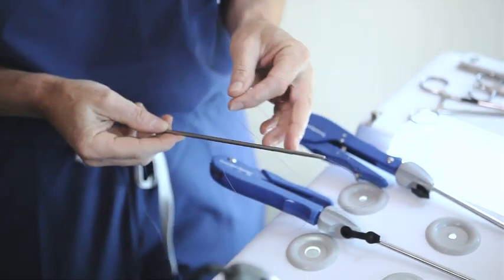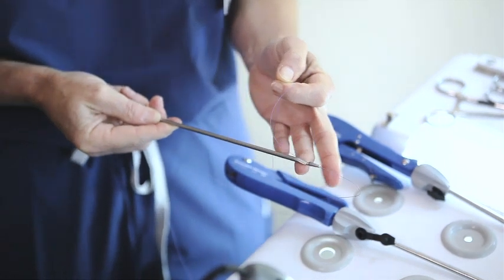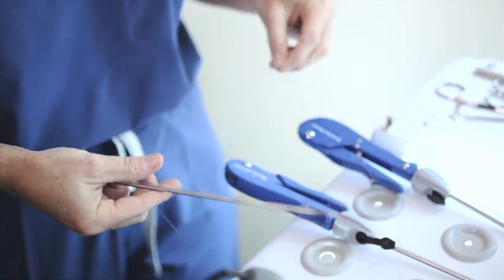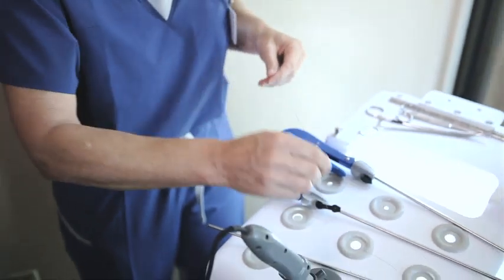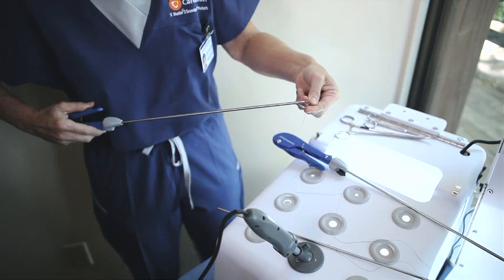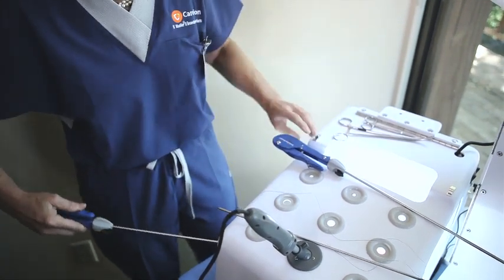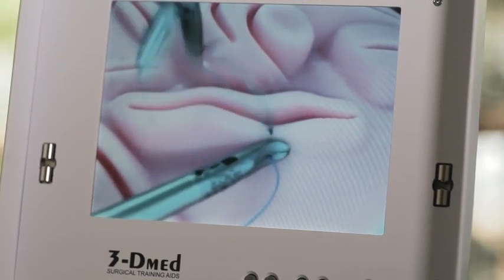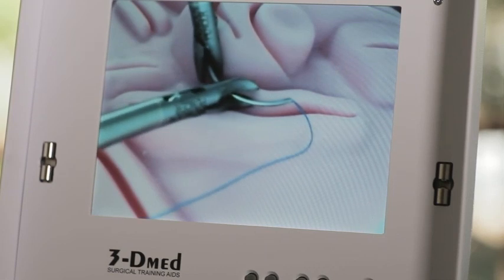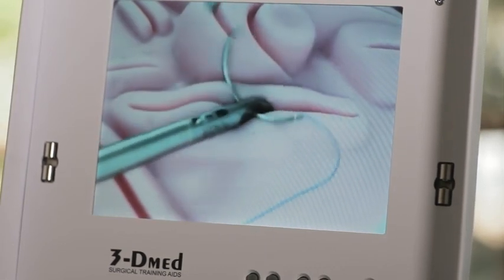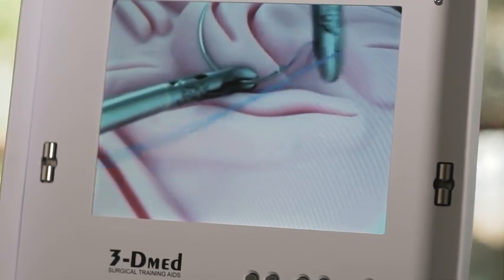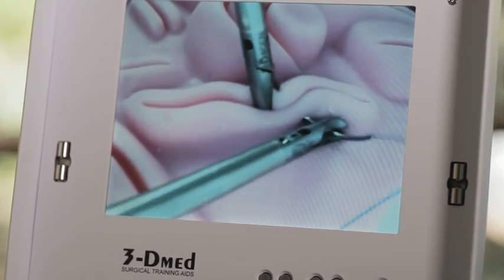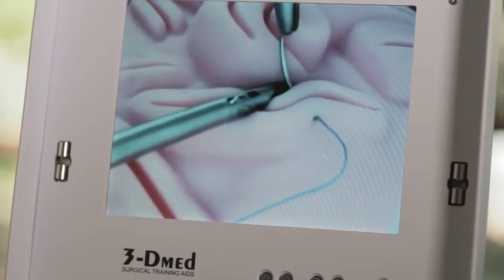To demonstrate extracorporeal knot tying, we're going to start with our extracorporeal knot pusher pre-loaded at the end of our suture. We use the full length of the CT1 suture. I'll set this aside as I take my suture and needle and pass it through the tissue, into the trocar, and pass our stitch. I'm going to grasp it in the sweet spot. I could either use the tissue to orient me or perfect it by pulling the suture.